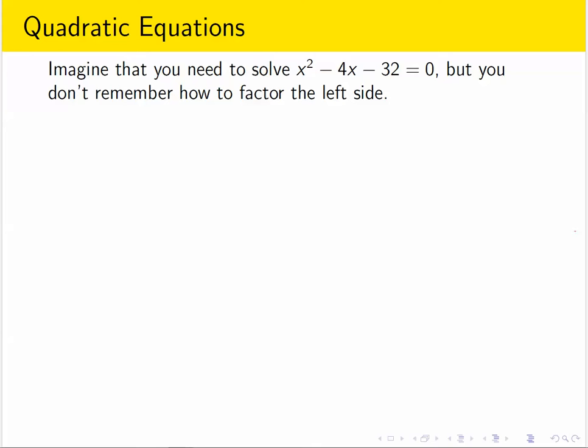The first thing I want to do is illustrate the technique that's used to derive the formula with a specific example. Imagine we're trying to solve x squared minus 4x minus 32 equals 0, but I imagine I don't remember how to factor the left side.